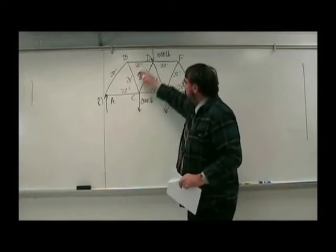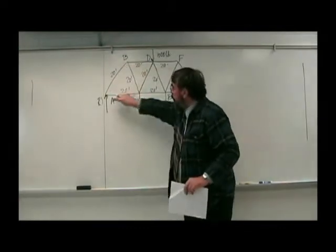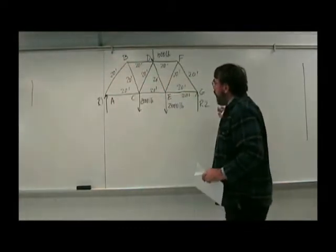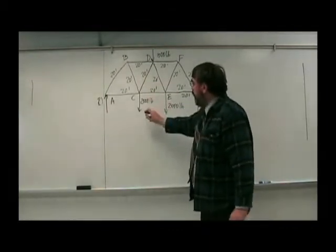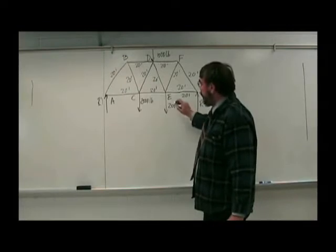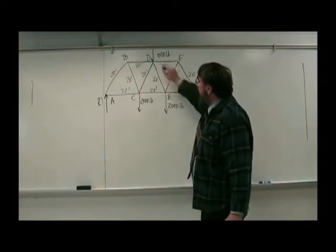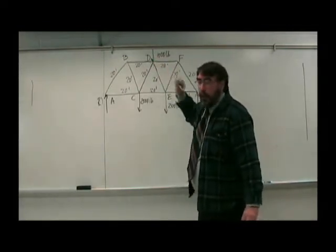It's got a bunch of members. The joints are labeled with letters. There's three loads on it. 2,000 pounds here at joint C, 2,000 pounds at E and 1,000 pounds at D.